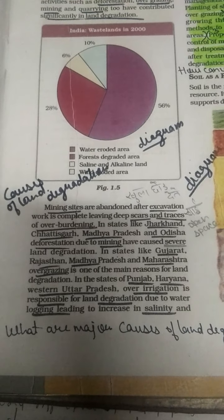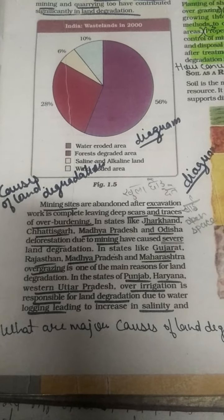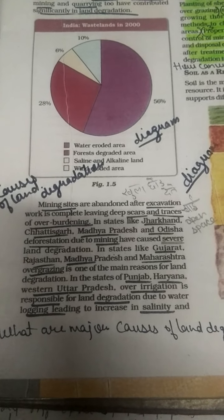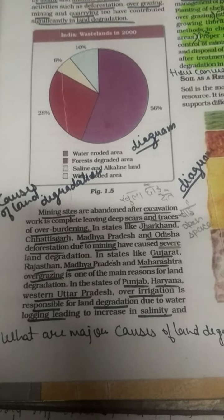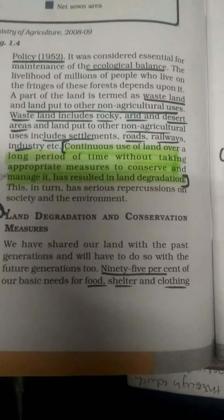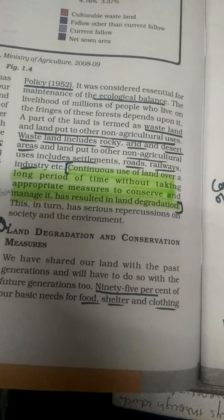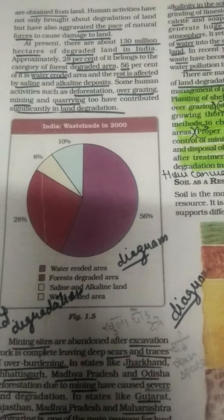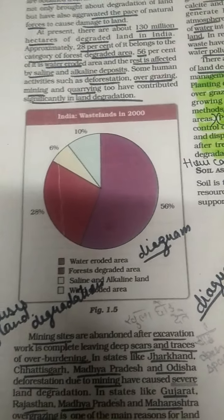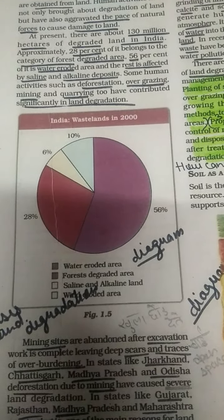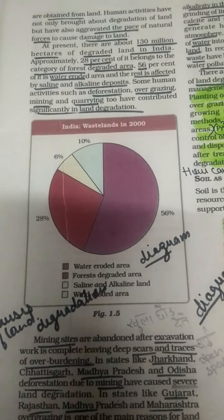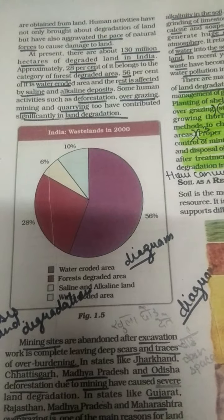Good morning, students. Before starting the new chapter, just take one look at the previous topic — what we covered in the last class. We were discussing land degradation and conservation. We also discussed this diagram. This is the wasteland data from 2000, but I will provide updated data from Google 2011 that we will discuss in the classroom.